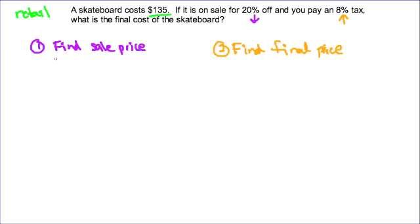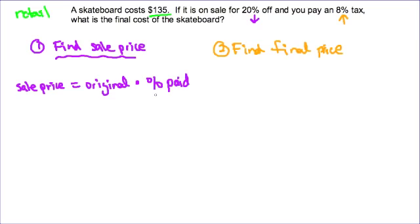So the first thing I'm going to do is I'm going to find the sale price. And to do that, I'm going to use an equation that basically says that the sale price equals the original price multiplied by the percent paid. The sale price is what I'm trying to find, so that's my variable. I know the original price is $135.